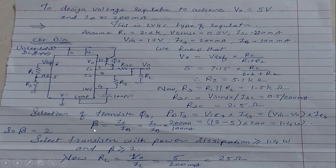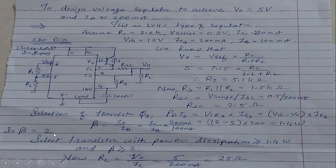This is an NPN transistor, so beta = IC / IB. IC equals the load current IL, which is 200 mA. Assuming IB = 100 mA, we get beta = 2. Therefore, select a transistor with power dissipation greater than or equal to 1.4 W and beta greater than or equal to 2.